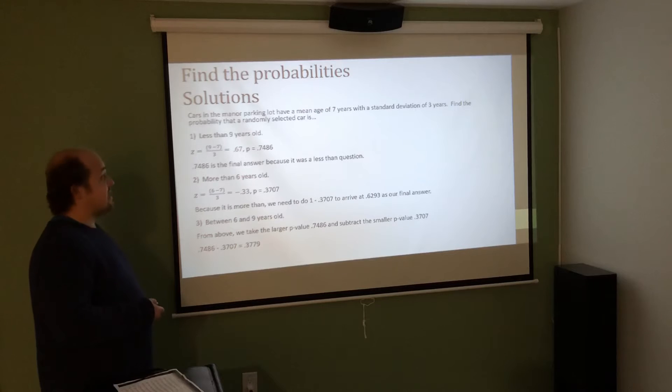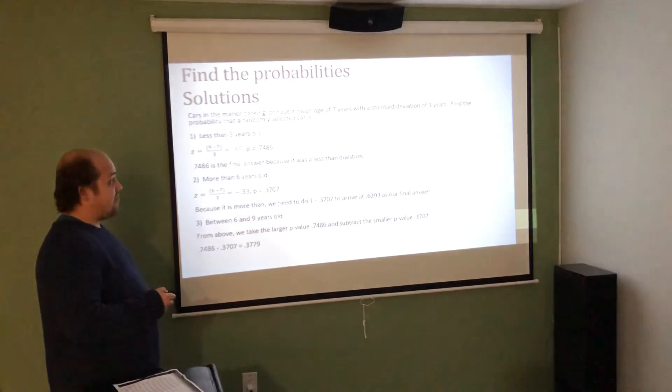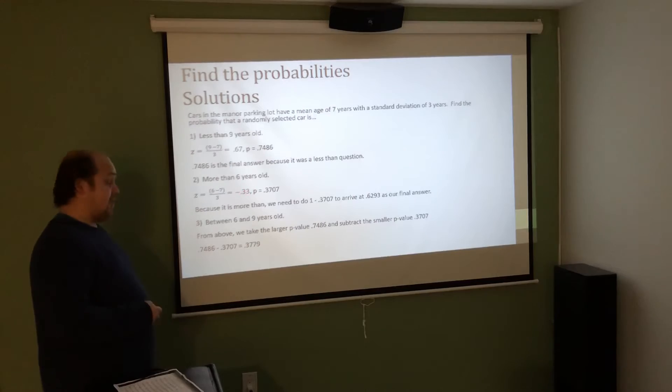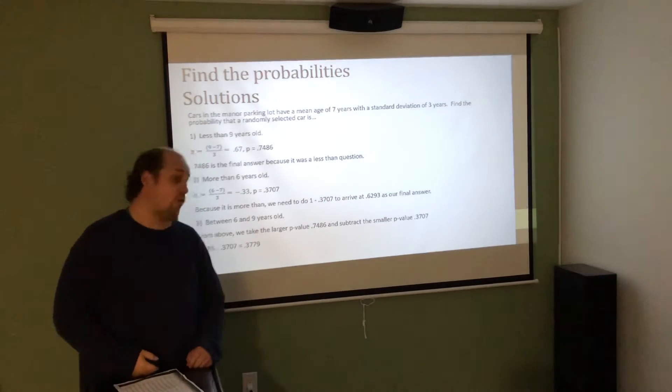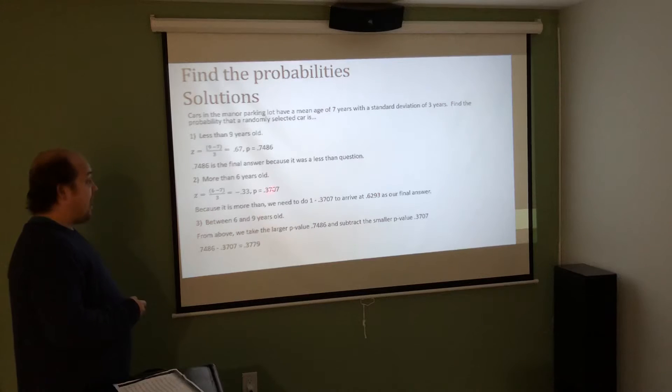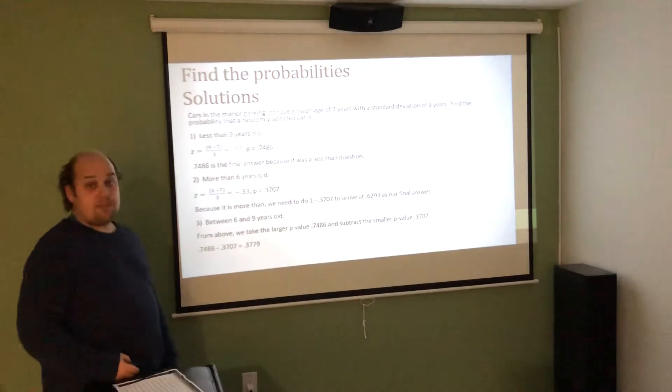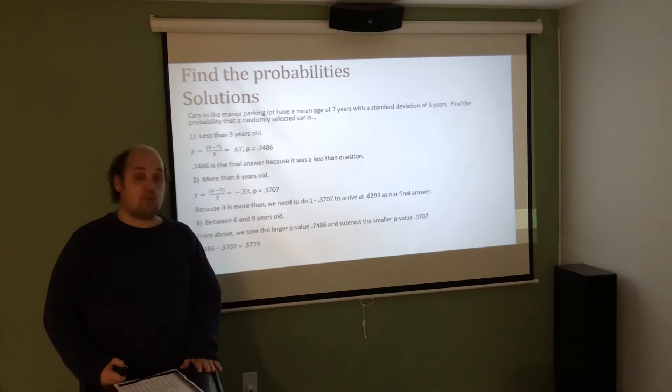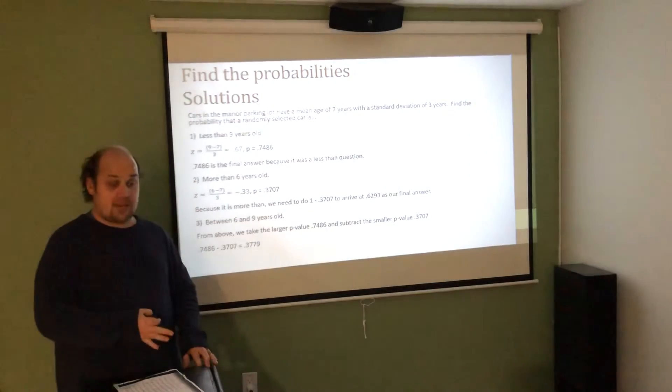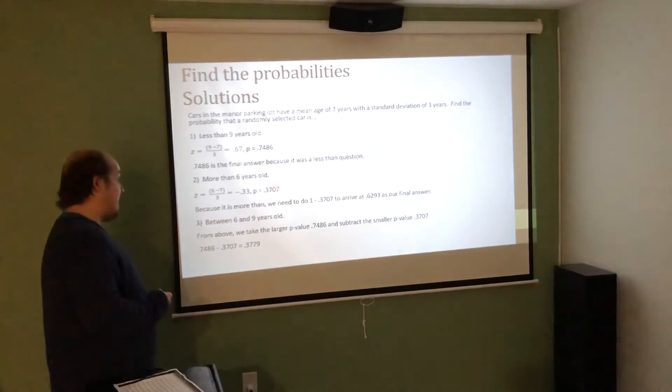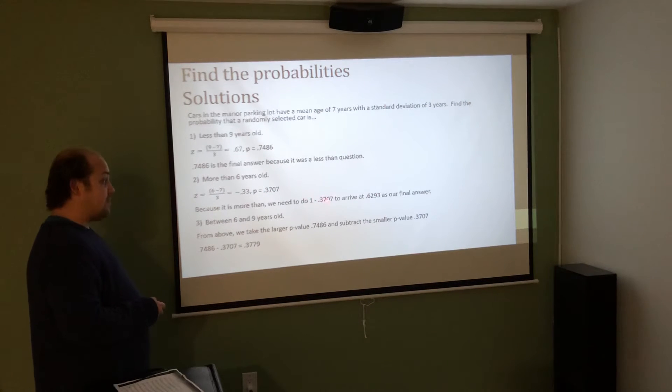For the second question, more than 6 years old. Again, I first calculate the z-score by taking the value of interest 6 minus the given mean 7. That answer is a negative 1, which is then divided by the standard deviation of 3, to get a z-score of negative 0.33. On the negative side, I go down to the row negative 0.3, over to the column 0.03. And when I line them up, I get 0.3707. That really tells me the percent of cars that are less than 6 years old. But the question wanted more than 6. So in order to accommodate for that, I need to do 1 minus the table value, or 100% of the values minus the percent that fall on the left. So since the table value is 0.3707, when we do 1 minus 0.3707, we arrive at our correct answer, 0.6293.